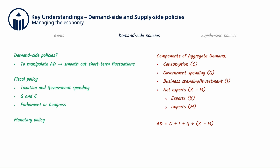Monetary policy is the use of money supply and interest rates as tools to manipulate AD. Changing interest rates affects business investment (I), and to a lesser extent, consumption (C). Monetary policy is controlled by the country's central bank.